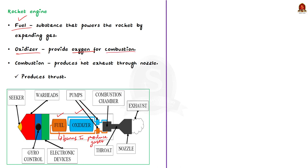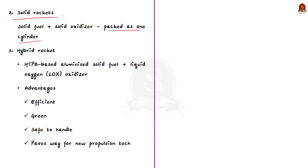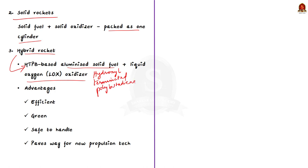The combustion produces hot exhaust which is passed through a nozzle to produce thrust. Now, coming to the categories of rocket engines — there are two main categories: liquid rockets and solid rockets. In a liquid rocket, the propellants — the fuel and the oxidizer — are stored separately as liquids and are pumped into the combustion chamber where burning occurs. But in a solid rocket, the propellants are mixed together and packed into a solid cylinder. Today's article says that the hybrid propulsion system was tested with HTPB-based aluminized solid fuel and liquid oxygen oxidizer. HTPB means hydroxyl-terminated polybutadiene. The hybrid system is said to be more efficient, greener and safer to handle, paving the way for new propulsion technologies for future missions.